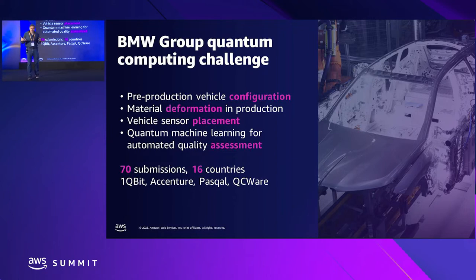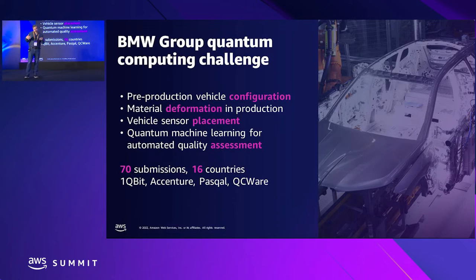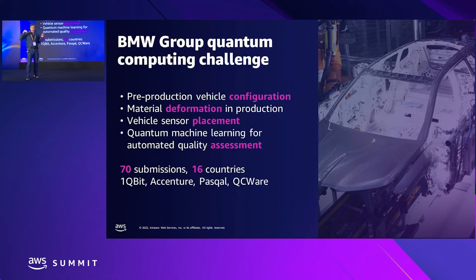A project of this type really impacted industry and the perception of quantum computing. There were 77 submissions from 16 countries; the winners were announced in December — three startups: 1QBit, Pascal QCR, from different continents, and Accenture. The challenge was interesting because it crowdsourced approaches to real-world problems, building a bridge between science and industry.